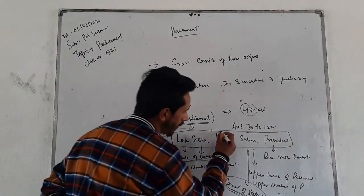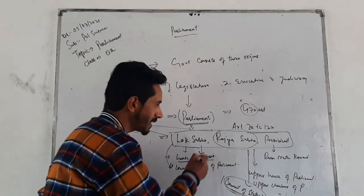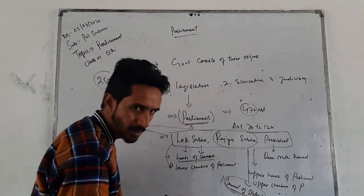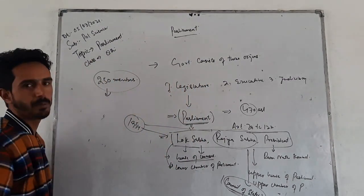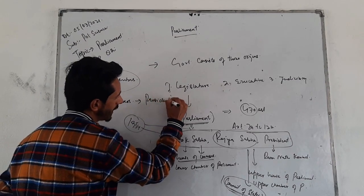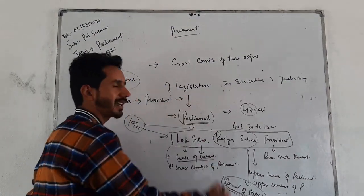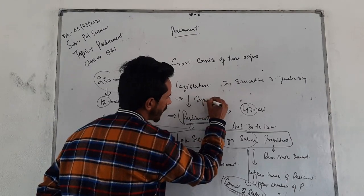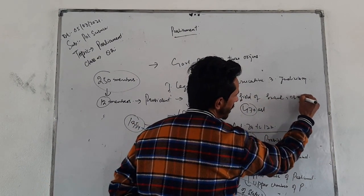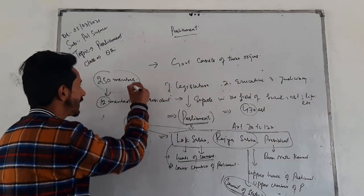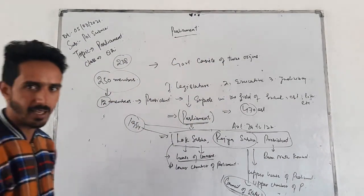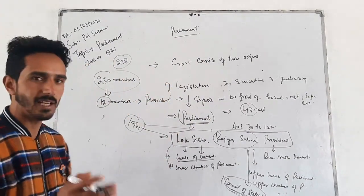When we talk about the composition of Rajya Sabha, the maximum strength of Rajya Sabha is 250 members. Out of 250 members, 12 members are nominated by the President because they are experts in the field of science, art, literature, and so on. The remaining 238 members are elected indirectly by the state assemblies.